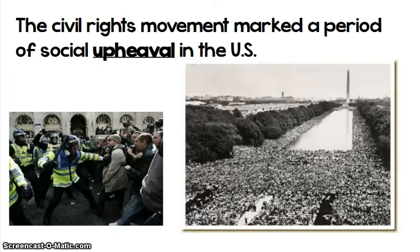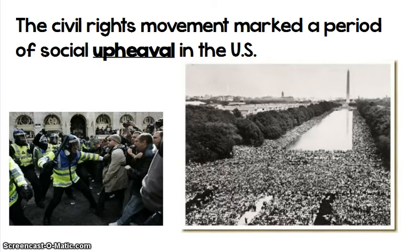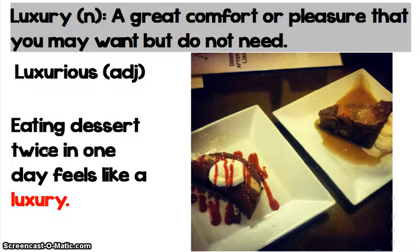You could also talk about things in society that cause massive changes. For example, the civil rights movement in the 1960s caused a lot of change in this country — it ended segregation, and for the first time this country started to move into a period where people of all races were considered equal. So the civil rights movement marked a period of social upheaval, or social change, in the United States. Keep in mind that upheaval refers to major changes that cause a lot of stress or positive shifts — not regular little changes like changing the channel or your clothes.